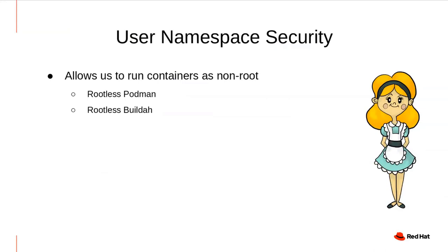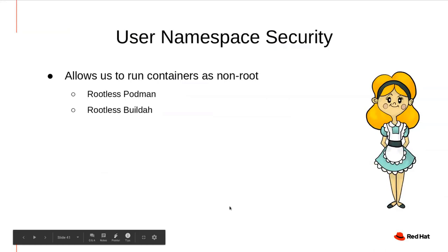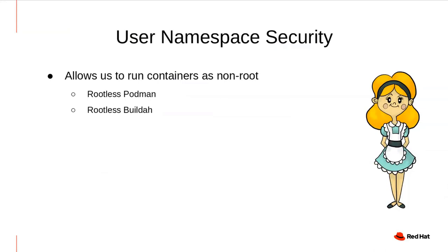Let's talk about user namespaces. Red Hat has been leading the way in driving forward user namespaces. In Linux, a namespace provides an isolated view of your system with respect to a set of resources — in a PID namespace you only see processes in that namespace. Within a user namespace, you only have access to the range of UIDs and GIDs in that namespace, providing an extra layer of isolation. A privileged root user inside the container can be mapped to a non-privileged user on the host — so if a process breaks out of that container, it wouldn't have elevated privilege on the host.